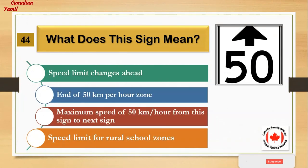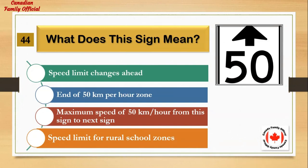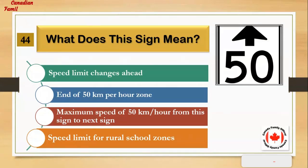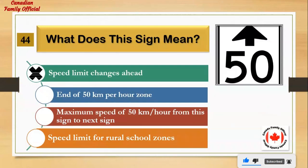What does this sign mean? Number 1: speed limit changes ahead. Number 2: end of 50 km per hour zone. Number 3: maximum speed of 50 km per hour from this sign to next sign. Number 4: speed limit for rural school zones. And the answer is: speed limit changes ahead.